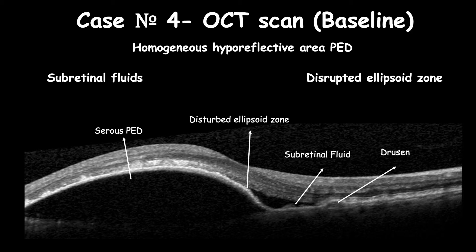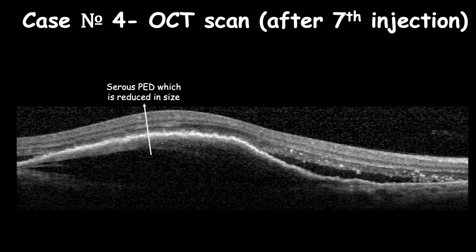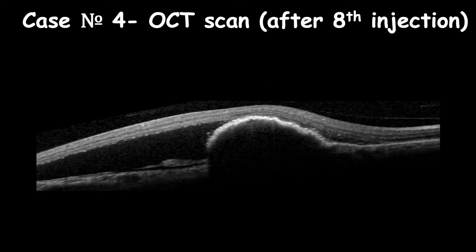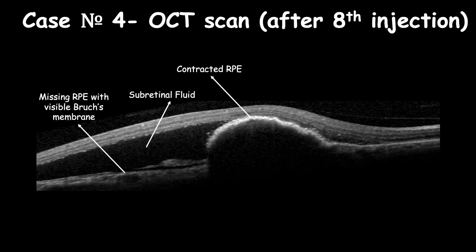The patient was treated with seven injections of ranibizumab and maintained best corrected visual acuity of 20/40 with reduced PED volume and persistent subretinal fluids. After the patient received the 8th injection, she complained of reduced vision to 20/150. On OCT scan, an RPE rip was identified which indents the retina and increases hyperreflectivity in the area of contracted RPE with underlying shadowing hindering the choroidal view, in contrast to the area where the RPE has ripped off, where only Bruch's membrane is visible.